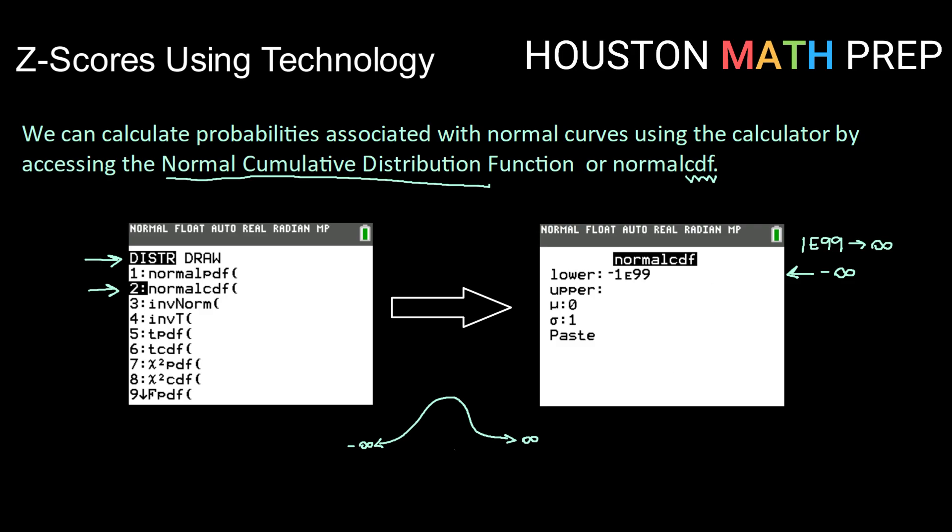That is not possible to type in. Infinity is not something we can type into the calculator. So negative 1e to the 99 is negative 1 followed by 98 zeros, or a very large negative number. That's just your calculator's way of working with that.